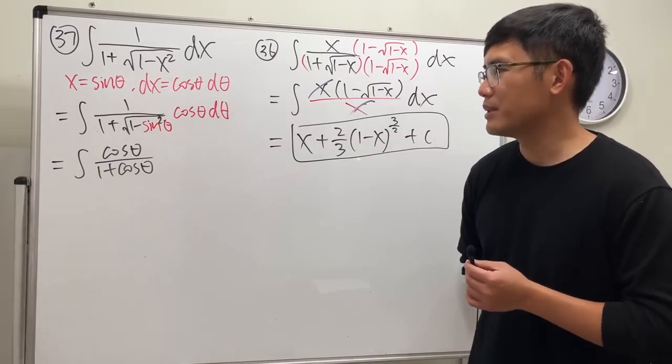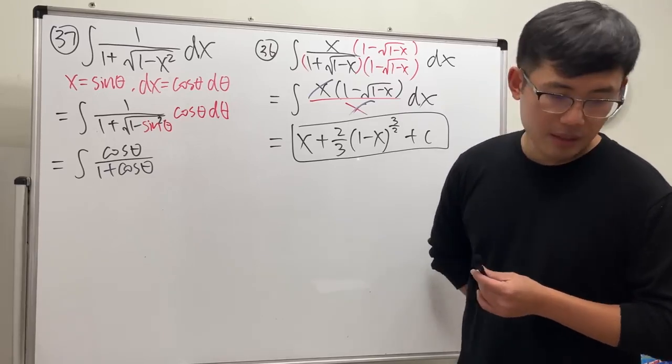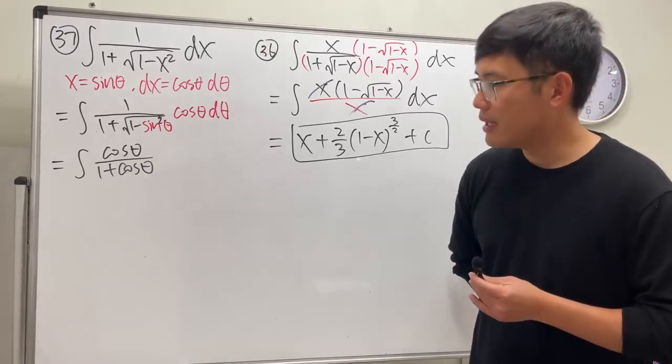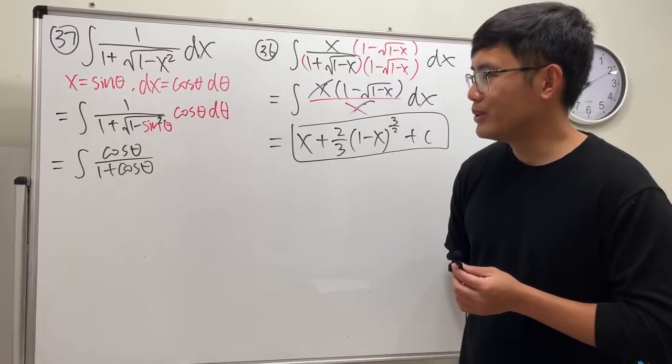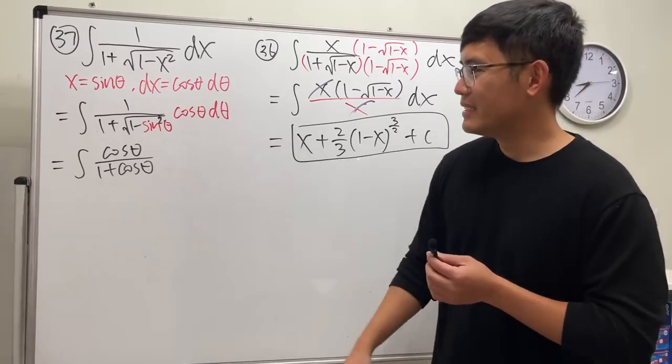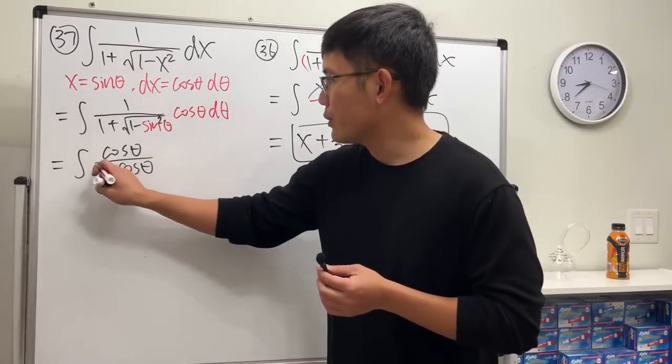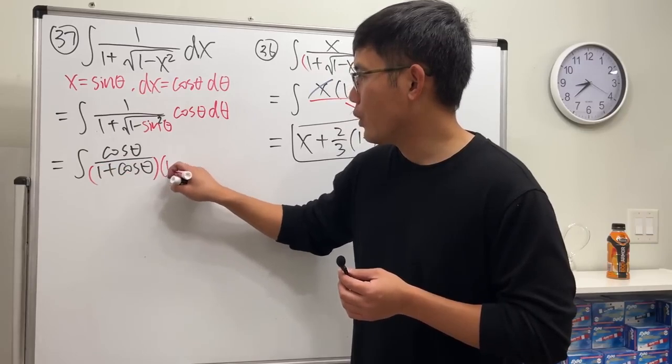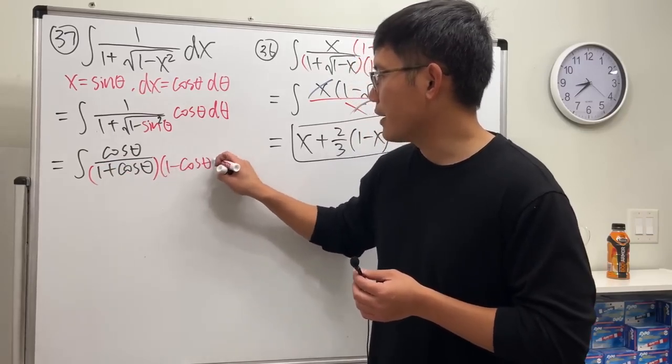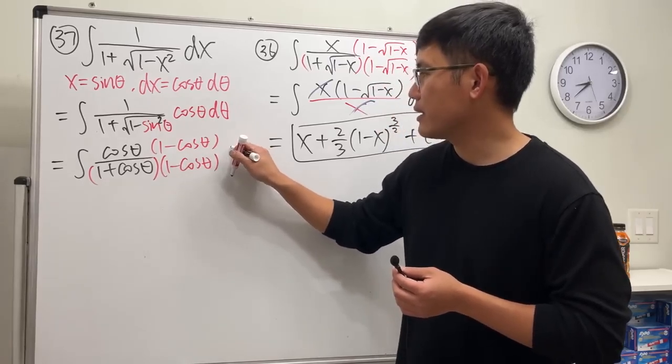What else can we possibly do? Weierstrass substitution, definitely give it a try. And yeah, I will hold to the conjugate and see how it goes. So I will look at this and multiply by one minus cosine theta and then one minus cosine theta, and then we have the d theta here.